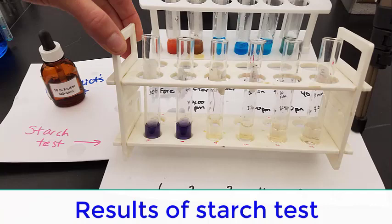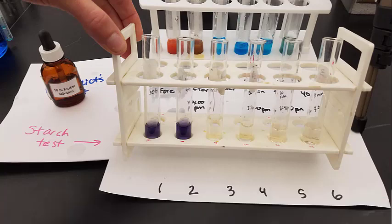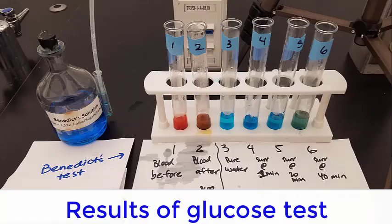Next up, the starch test. Test tubes one and two on the left are blood before and blood after. Definitely some starch there. Test tube three is water, and four, five, and six are the surroundings. Think about whether any sugar moved into the surroundings.